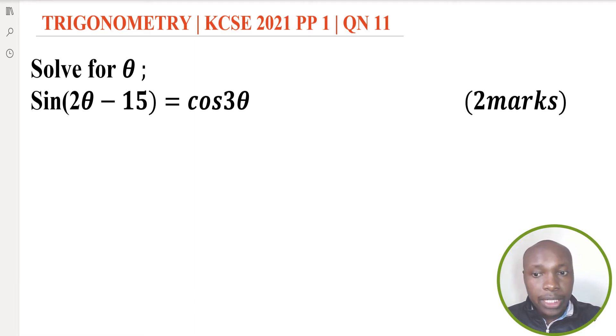This is the property of complementary angles in trigonometry. This is what I mean: given sine of a certain angle θ equated to cosine of a certain angle, let's say α.